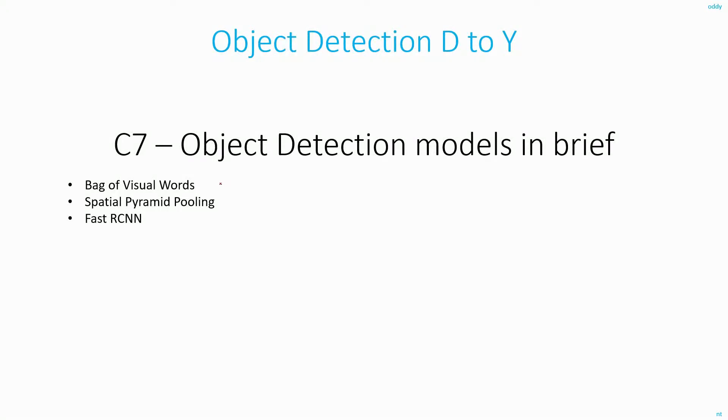Okay, we are in the 7th chapter of the course. Here in this chapter, first I will be discussing the bag of visual words concept. And then I will discuss these two papers, Spatial Pyramid Pooling and Fast RCNN.